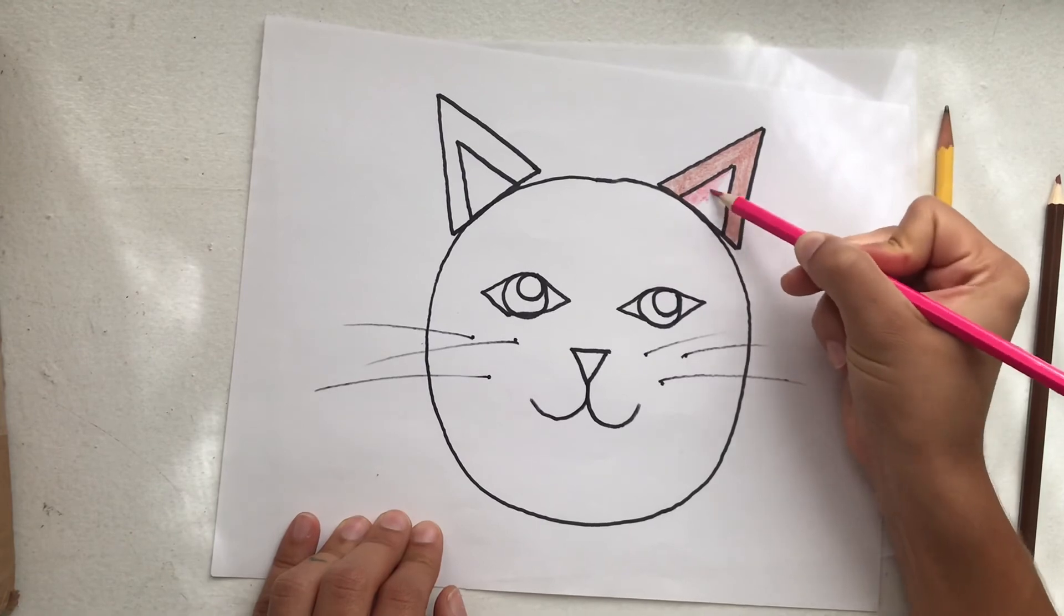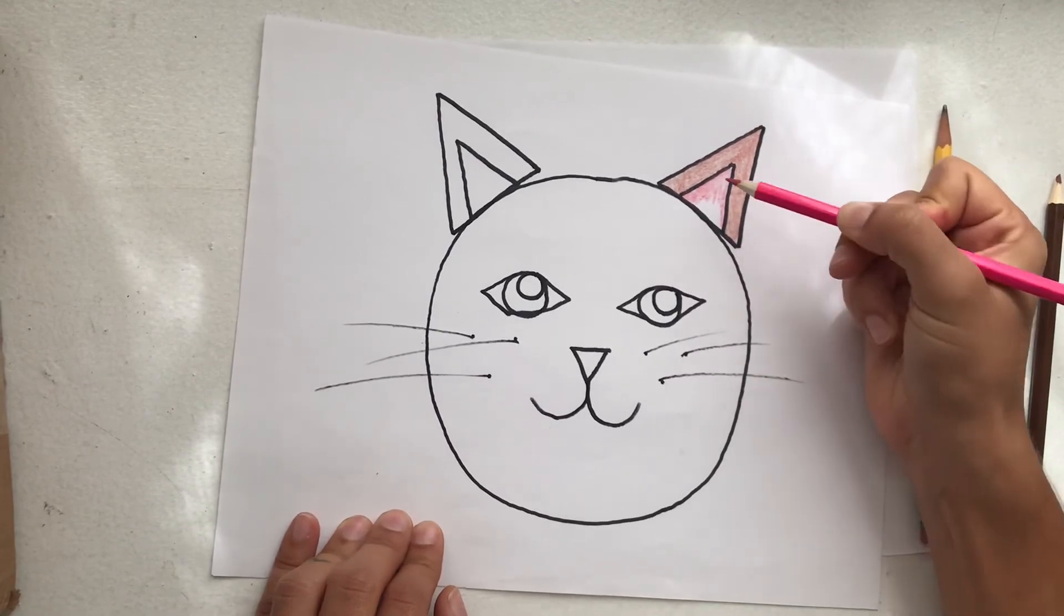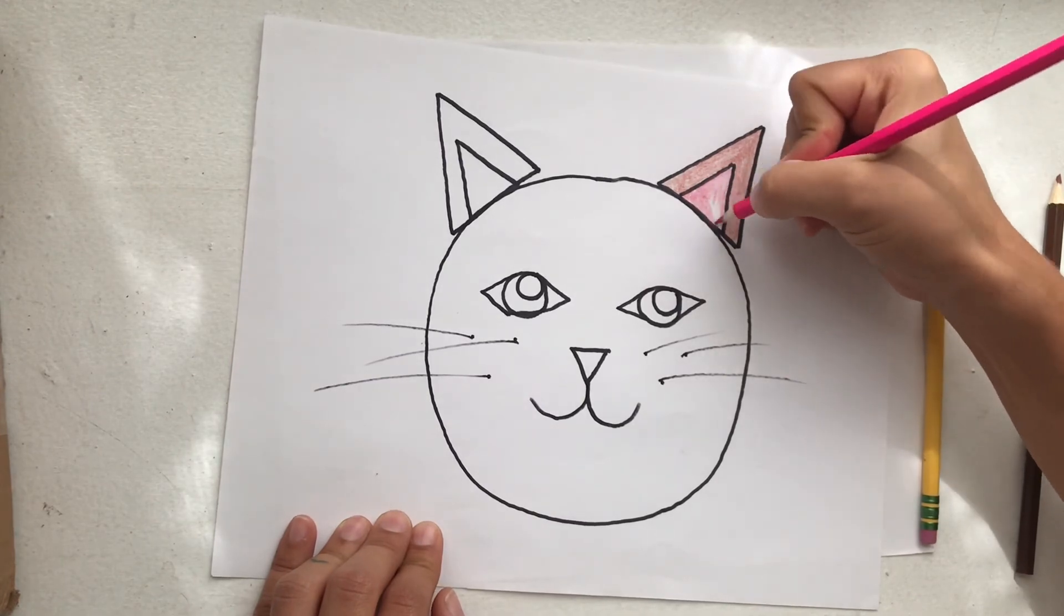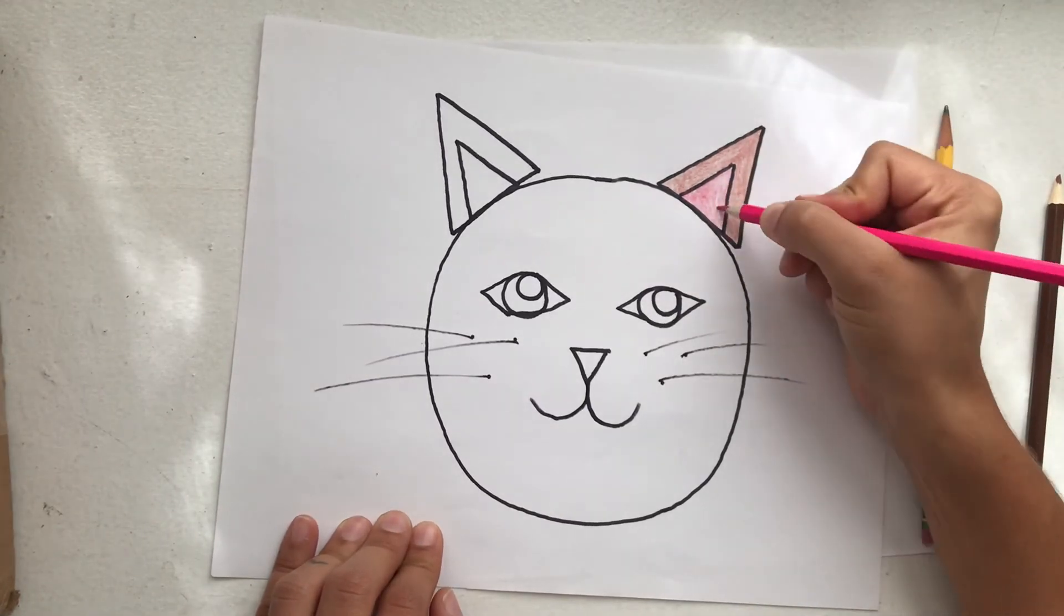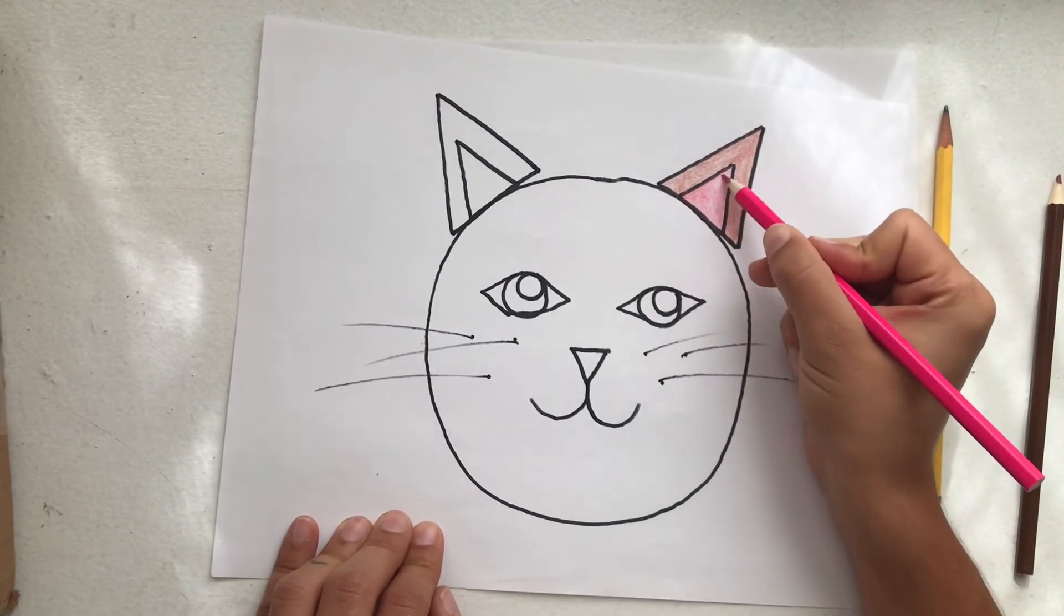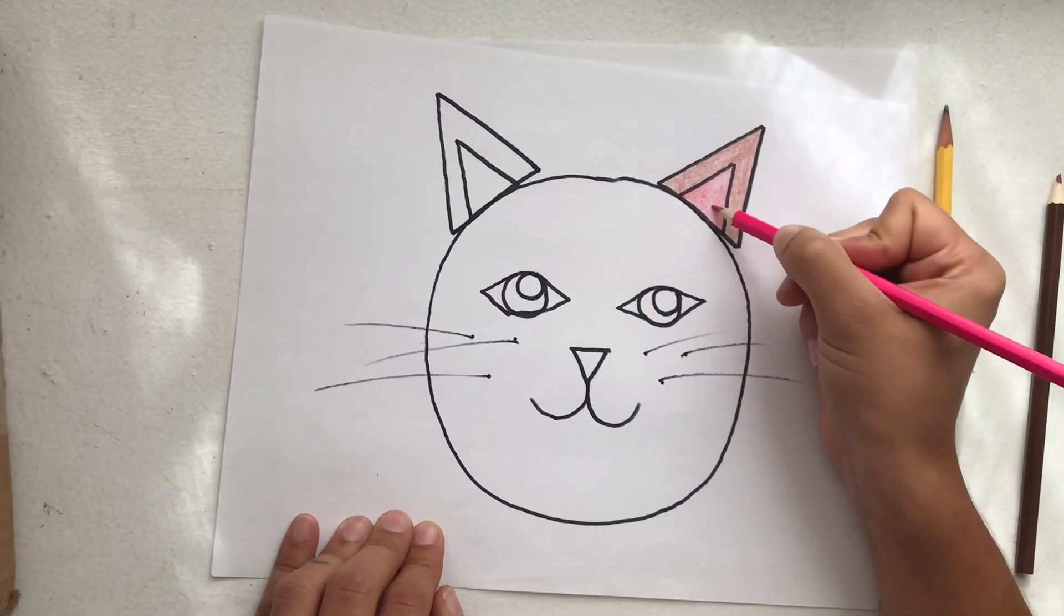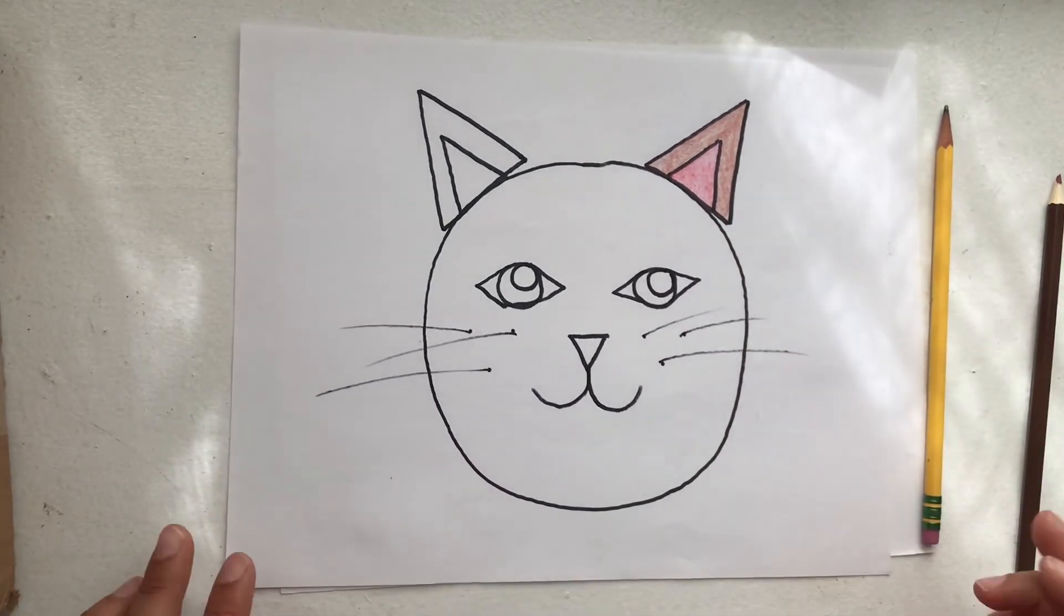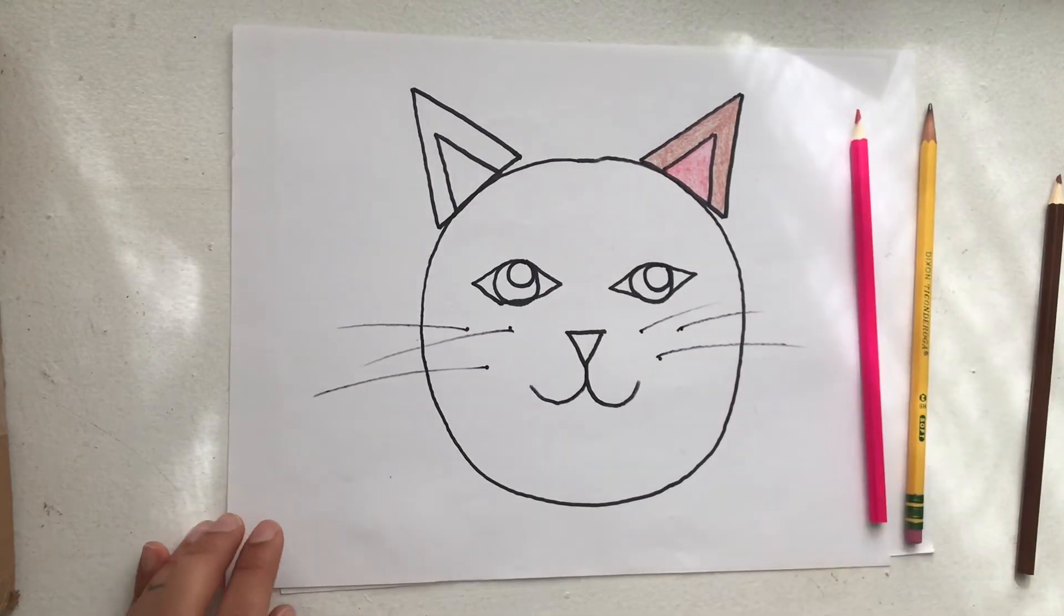When you're done with your kitties take a picture of your artwork and upload it to the assignment. If you are having trouble uploading the photo to the assignment you can send me a picture on Class Dojo, but please try to upload it to the assignment on your Google classroom. Good luck everybody!